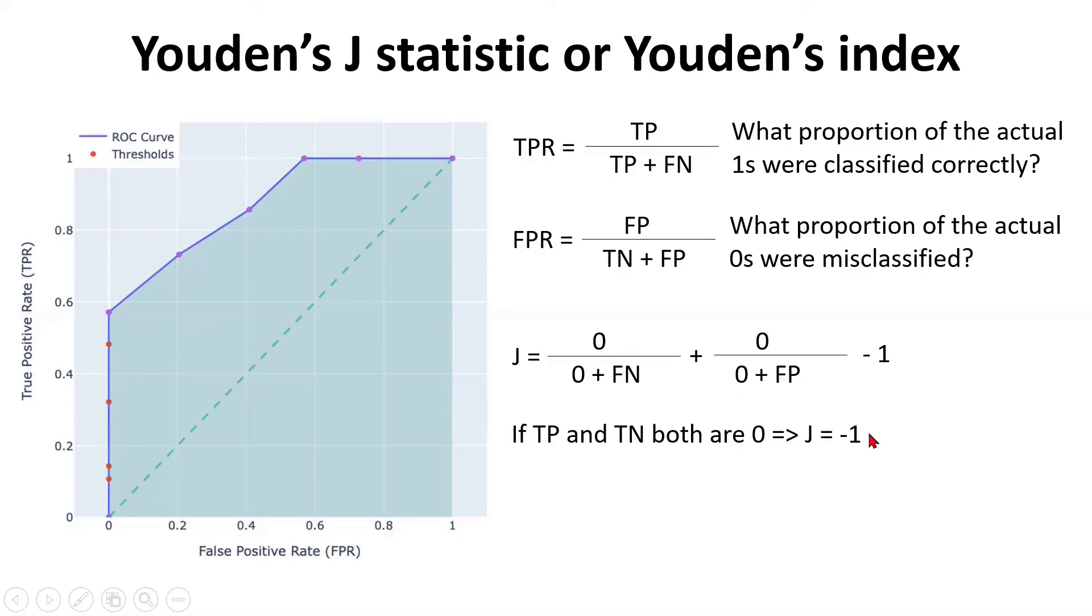So now you see J statistic would always lie between negative one to one moving from a perfectly erratic model to a perfectly accurate model. But let's spend a little more time on this J statistic and understand how does it actually help us get the optimal result.